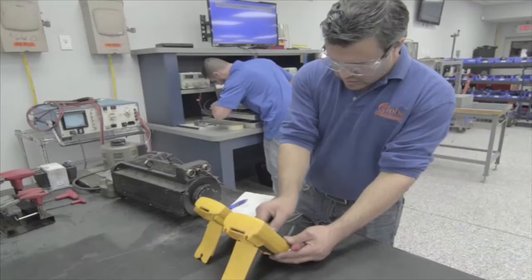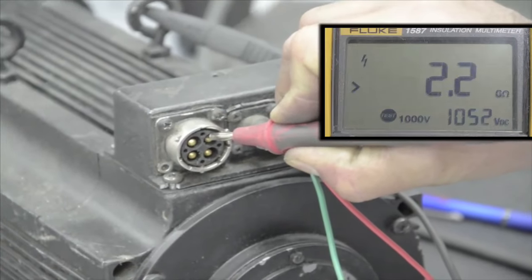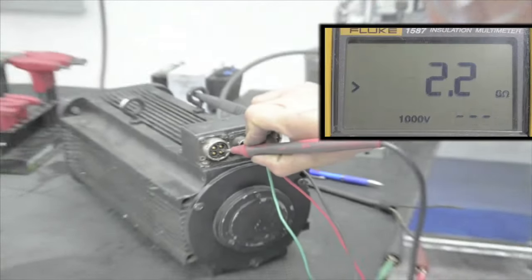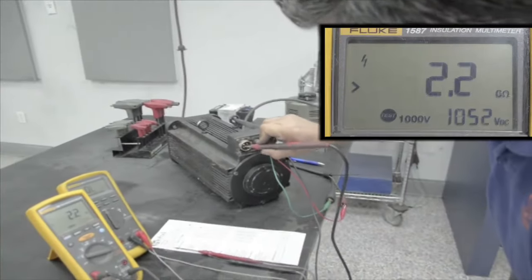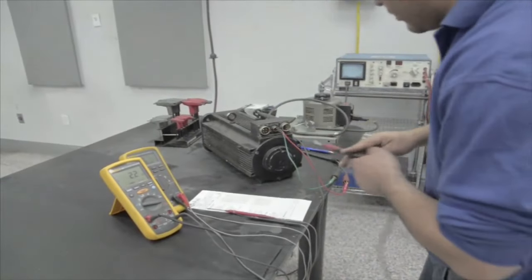Phase one, 2.2. Phase two, 2.2. Phase three, 2.2. All phases read 2.2 on the meter, which is excellent.